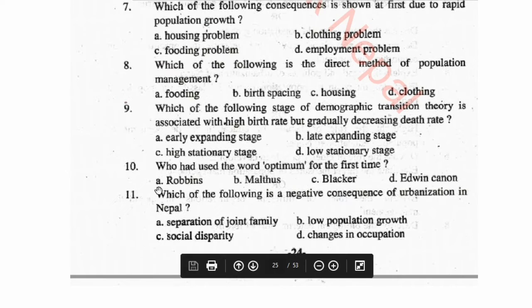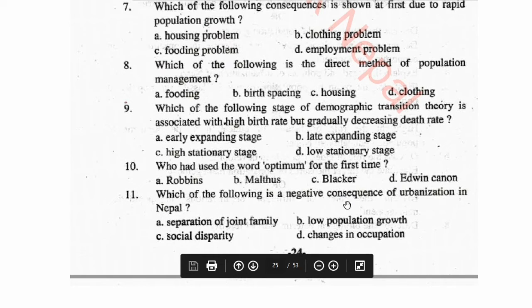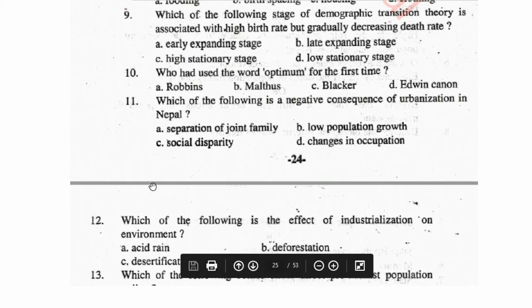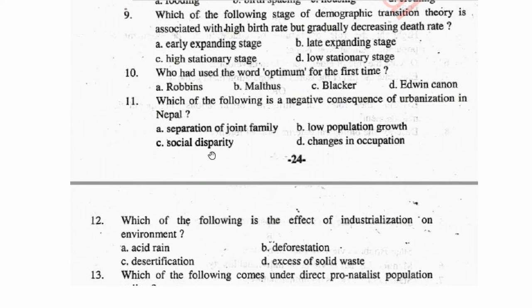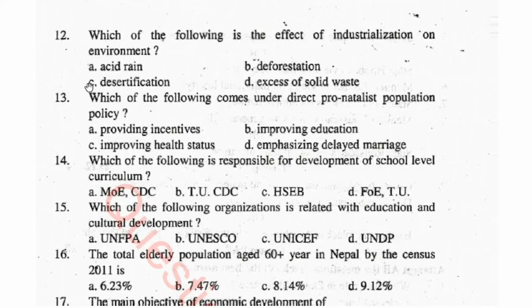Question 11: Which of the following is a negative consequence of urbanization in Nepal? Options: (a) separation of joint family, (b) low population growth, (c) social disparity, (d) changes in occupation.